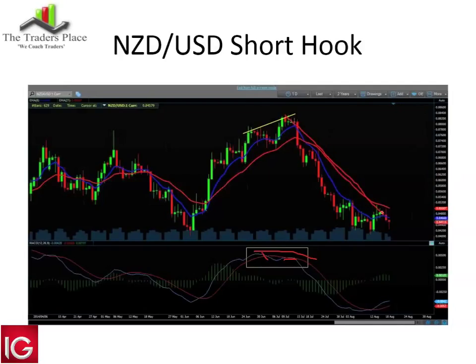What I like about the MACD — whether it's the hook trade or the slingshot — is that it can often pick major turning points in the market. On New Zealand Dollar/US Dollar, the market had strong upward momentum before the break lower. The MACD really negated that expectation of a bounce. I do like it at extreme points. There's also a potential hook trade forming on the longs side with a support level — keep your eyes on that if you're a forex trader.